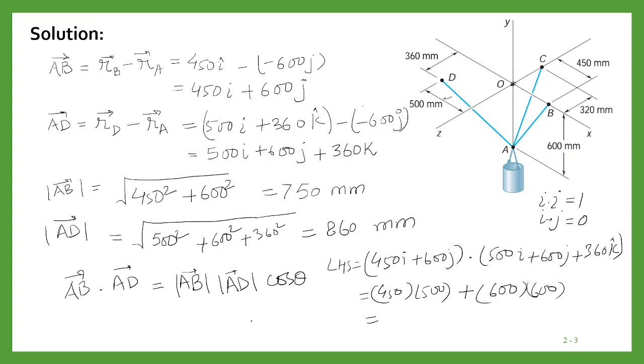When you multiply them, you will get some value. Now cos theta will be equal to this value, 450 times 500 plus 600 times 600, divided by the magnitudes 750 times 860, and this you will get as 0.209.